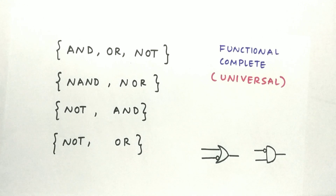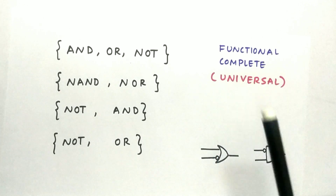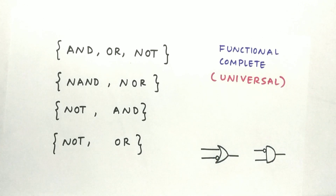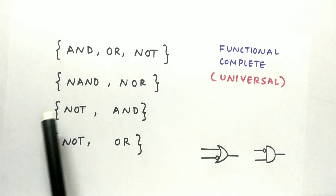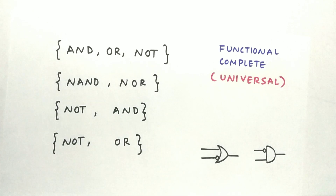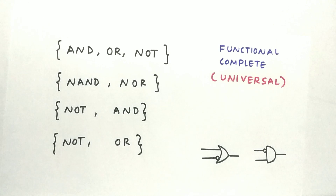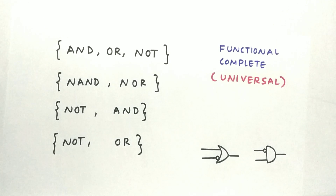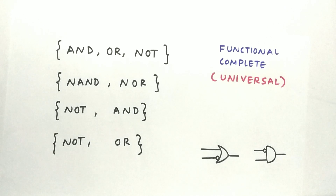The important point of this video is the concept of a functionally complete set or universal set — a set containing gates must be able to perform all boolean operations. That's the key point, not just the implied gate itself. The important skill is being able to check whether a given set is functionally complete or not.